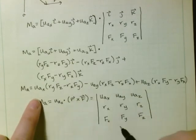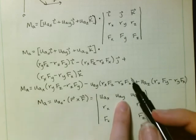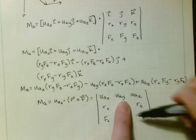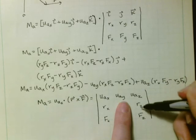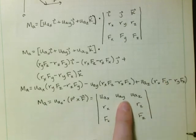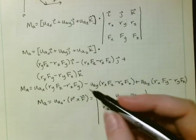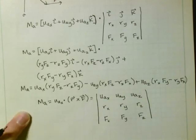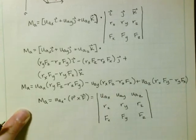You're going to minus that middle column, u_ay multiplied by (r_x f_z minus r_z f_x). And so this gives you your magnitude of the moment about the a-axis.